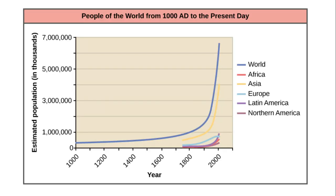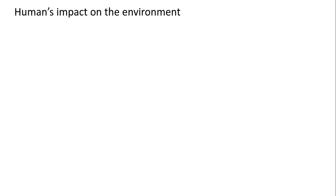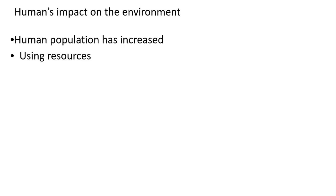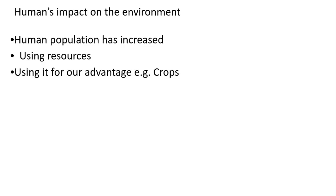The human population is increasing exponentially, as you can see from this graph, and that comes with its own problems. Due to population increases, we obviously need more resources and more spaces to live. Therefore we cause deforestation and habitat destruction to create housing, and we also need more food, taking advantage of the land for crops — thereby creating a loss of biodiversity.